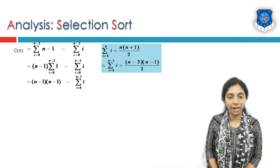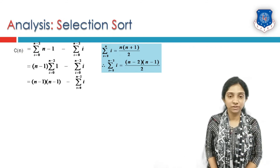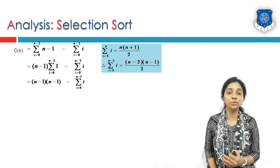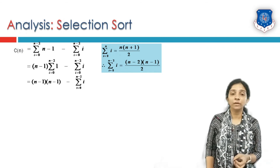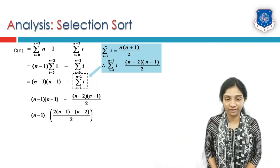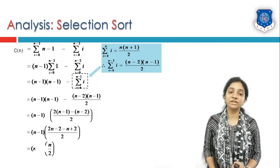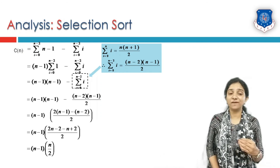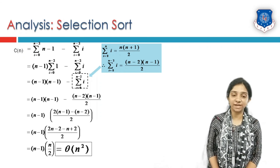Solving this equation: in term 1, n minus 1 is a constant, so it is taken outside the summation sign, giving n minus 1 times summation of 1 from 0 to n minus 2, which equals n minus 1 times n minus 1. For term 2, the summation of i from 0 to n minus 2 equals (n minus 2) times (n minus 1) divided by 2. Taking n minus 1 as common from both terms and simplifying the bracket gives n by 2. So the result is n minus 1 times n over 2, which equals one-half of n squared minus 1. Therefore the complexity of selection sort is Big O or Theta of n squared.